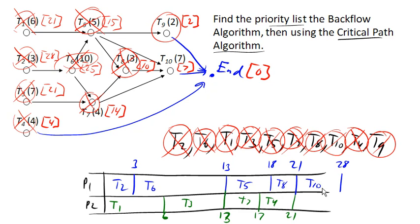And there we go. There's our schedule. And notice that 28 units of time was our critical time. And so this schedule is optimal. There is no way to make this schedule finish any faster than we did.